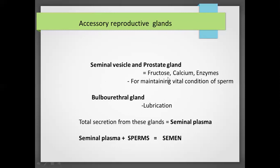The secretions from these glands provide materials and keep the sperm in a vital condition. The Cowper's gland provides a lubrication effect which helps during the insemination process.